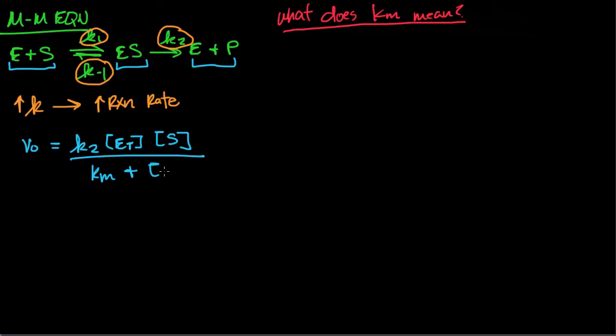One assumption that we're going to make is that your Vmax is when 100% of your enzyme is in the ES complex. So what we say is that Vmax equals k2 times your total amount of enzyme.